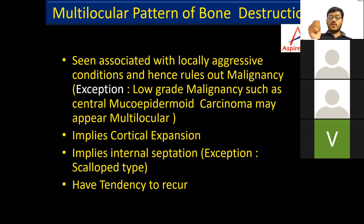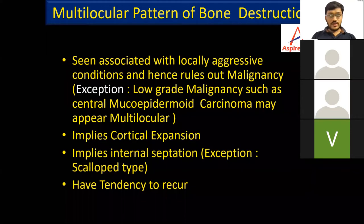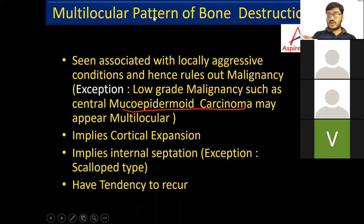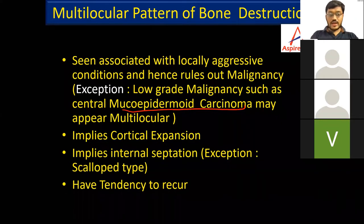The pattern of bone destruction can be unilocular, with three subtypes: geographic, moth-eaten, and permeative. The multi-locular type of bone destruction is usually seen with locally aggressive conditions, which rules out most malignancies — except for low-grade malignancy such as mucoepidermoid carcinoma, which might appear multilocular. Most multilocular lesions are not malignant.